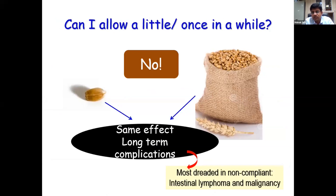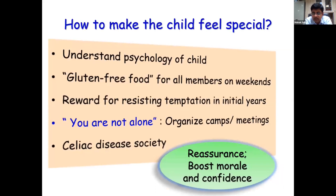Most parents will ask: can I allow a little once in a while? The vehement answer is no. The effect of giving one grain versus one bag is the same. Long-term complications will occur, and some patients unfortunately develop intestinal lymphoid malignancy. To make a child feel special, encourage gluten-free food for all family members on weekends — like a picnic. Provide rewards for resisting temptation in the initial years so it becomes a habit. Celiac disease societies worldwide provide a lot of morale and confidence.